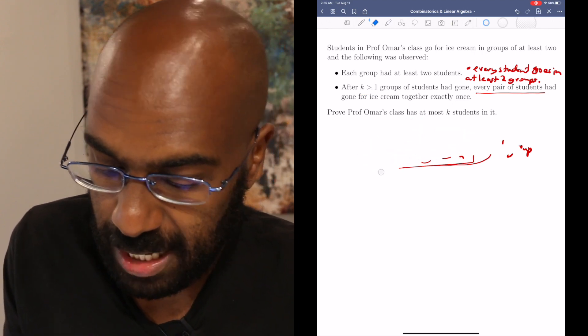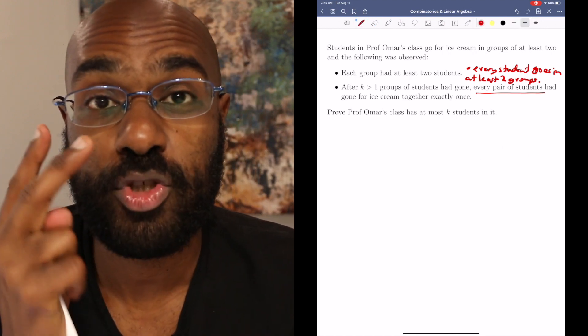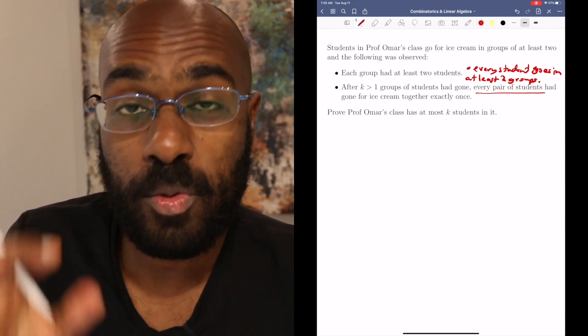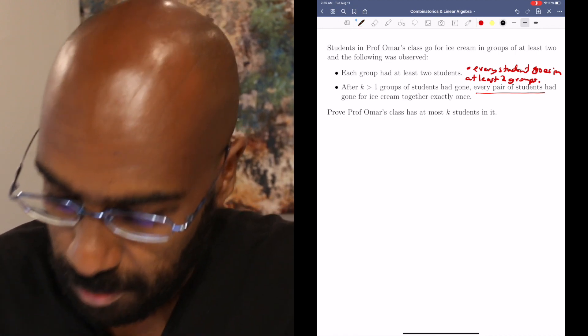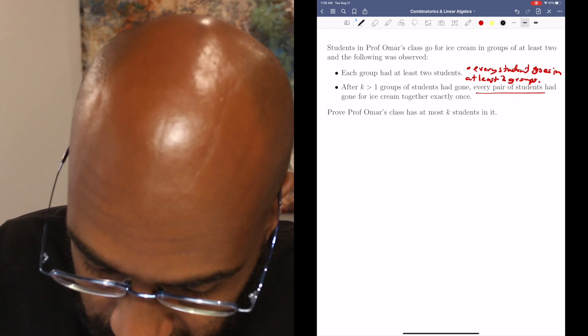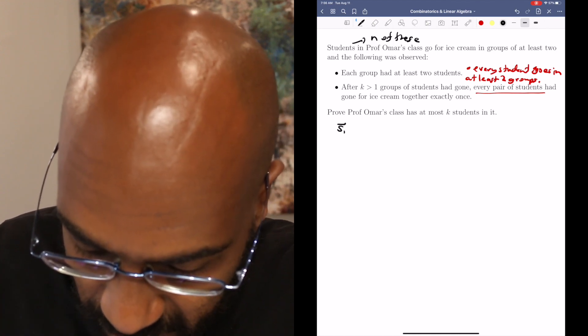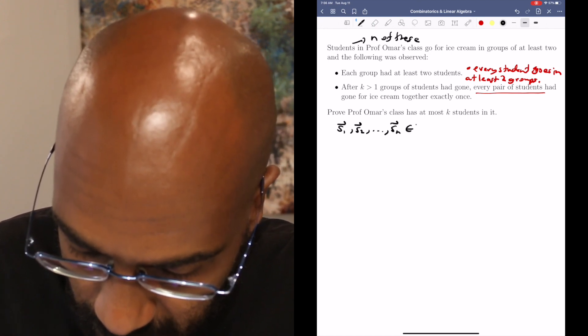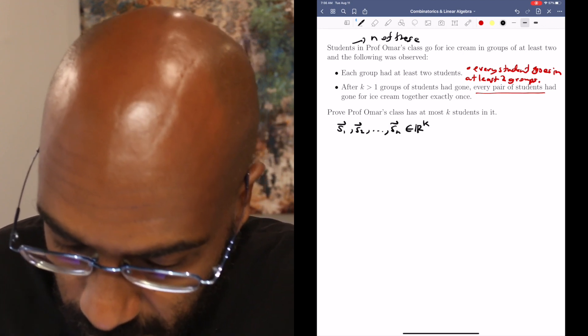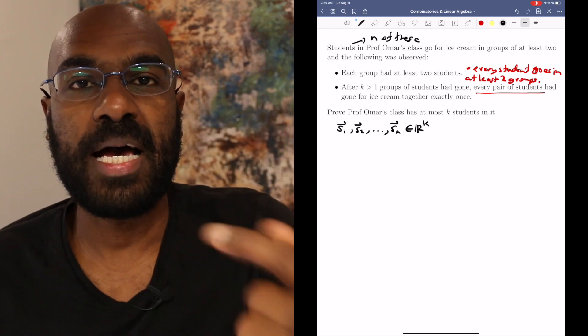Alright, so how do we approach this problem using a linear algebra approach? We're actually going to show two different ways to do this, starting with one fundamental observation, and then taking that observation in two different paths. So what we're going to do is, let's say there's n students in total, so n of these. What we'll do is construct vectors, n of them, one for each student. And these vectors are going to live in R to the k. So k is the number of groups, and so each component is going to be assigned to one of these groups.